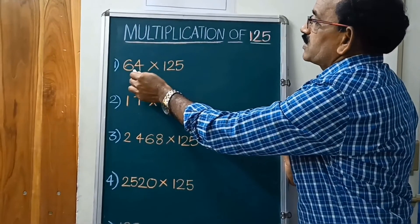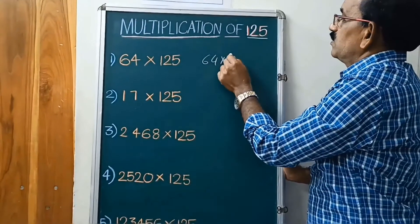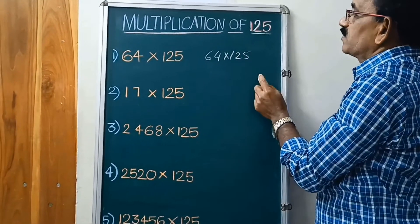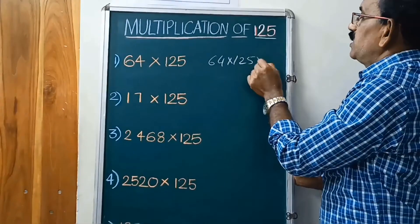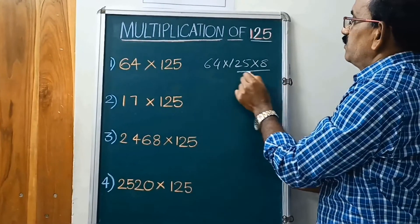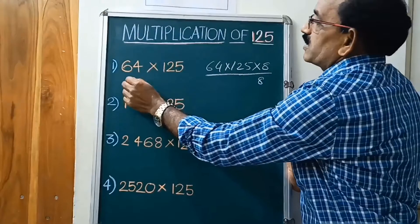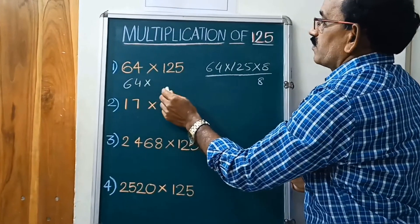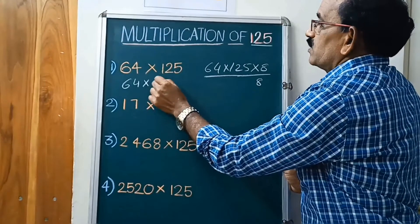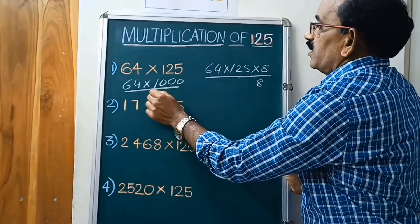Here is 64 into 125. 64 into 125. Multiply with 8, divided by 8. That is equal to 64 into 1000 by 8.